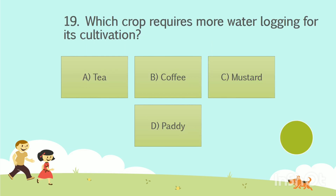Question No. 19. Which crop requires more water logging for its cultivation? Option A: Tea. Option B: Coffee. Option C: Mustard. Option D: Paddy. Your time starts now. The answer is Option D, Paddy.